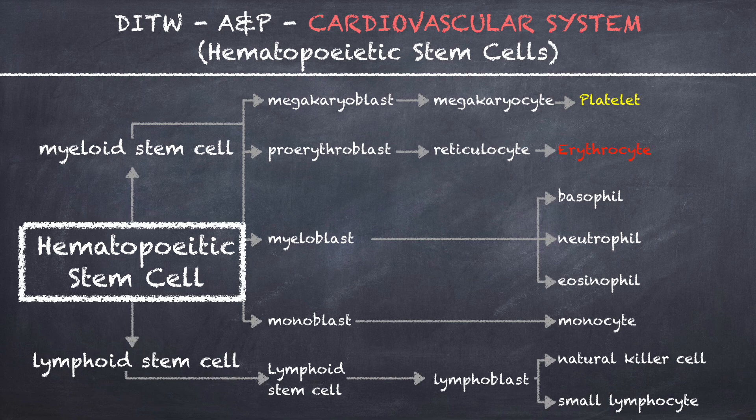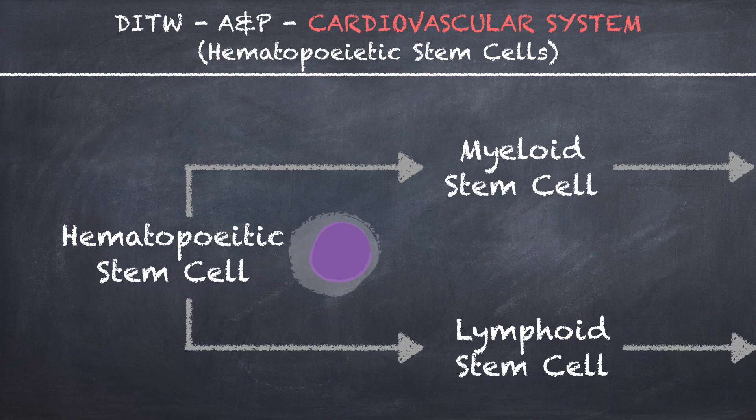Let's break down this chart to show you how each cell is created starting from the hematopoietic stem cell. Starting from the hematopoietic stem cell, you can follow one of two paths: the hematopoietic stem cell will differentiate either into the myeloid stem cell or the lymphoid stem cell.